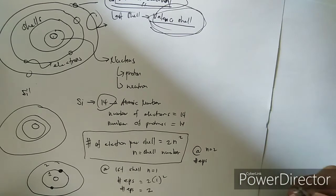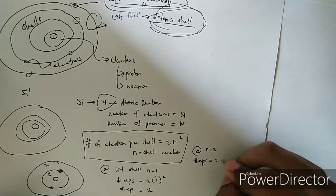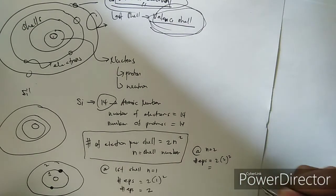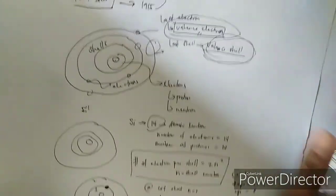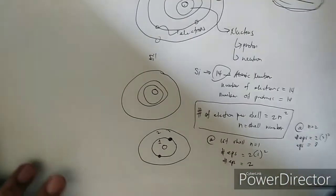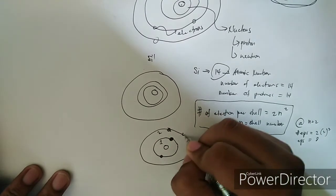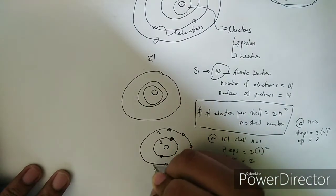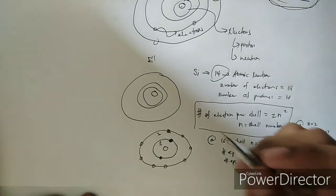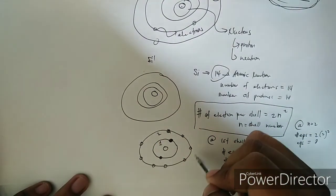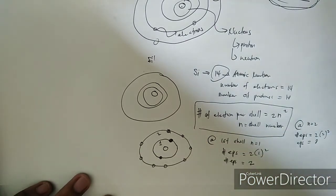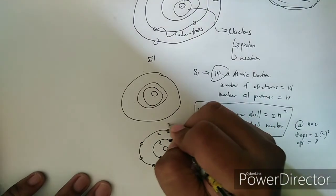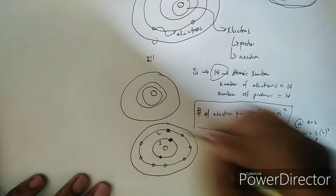For the second shell, where n equals 2, the electrons per shell equals 2 times 2 squared, which gives us 8. So the second shell has 8 electrons. Adding the first and second shells together, we now have a total of 10 electrons, and since silicon has 14 electrons total, we are still lacking 4, so we need a third shell.